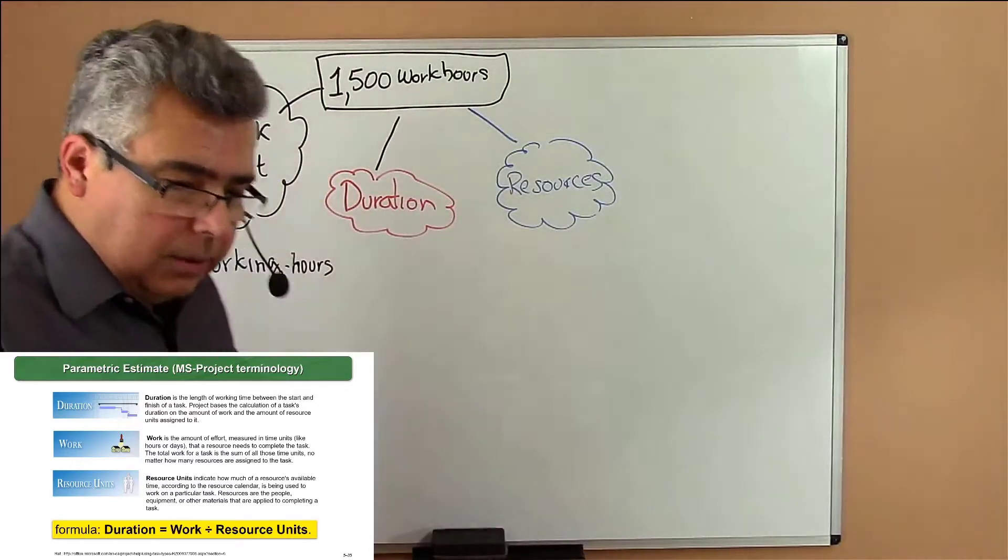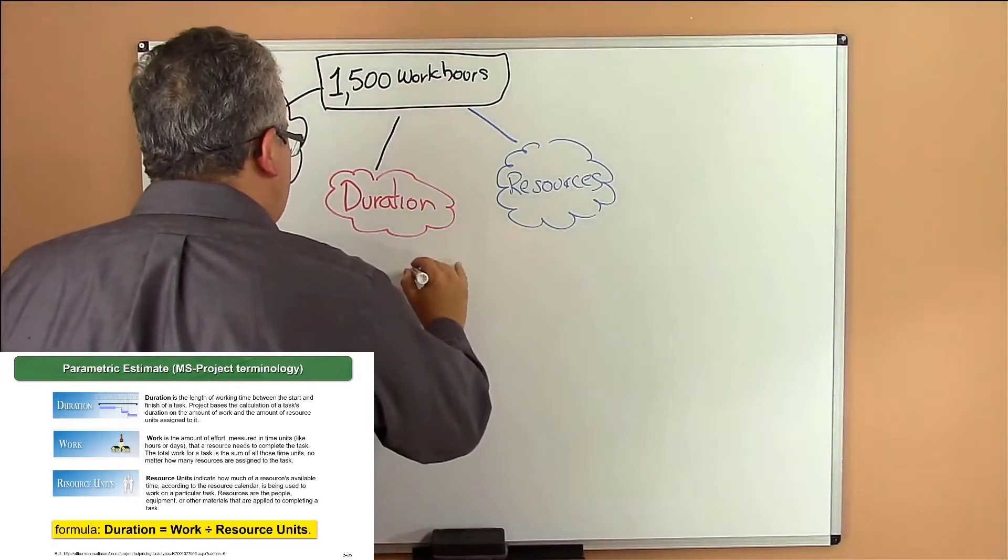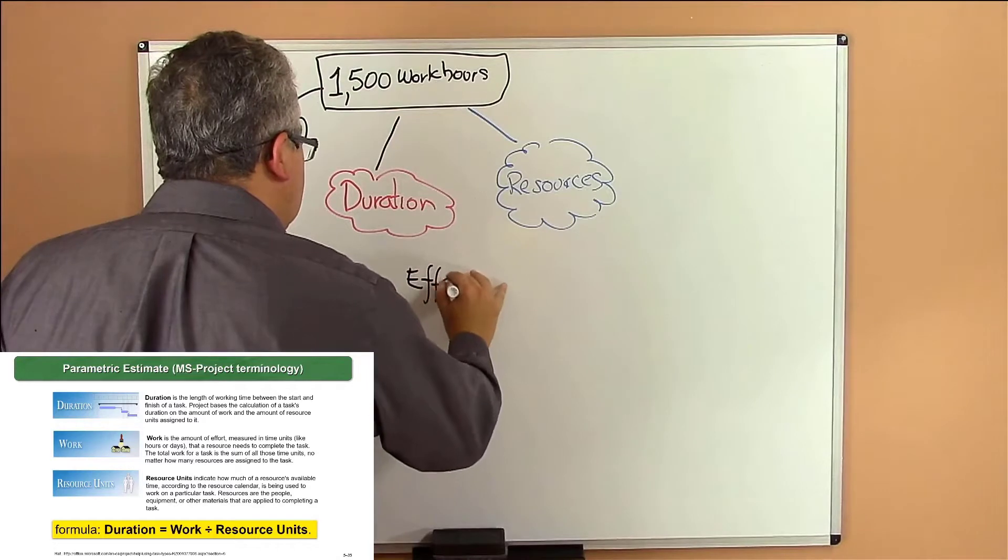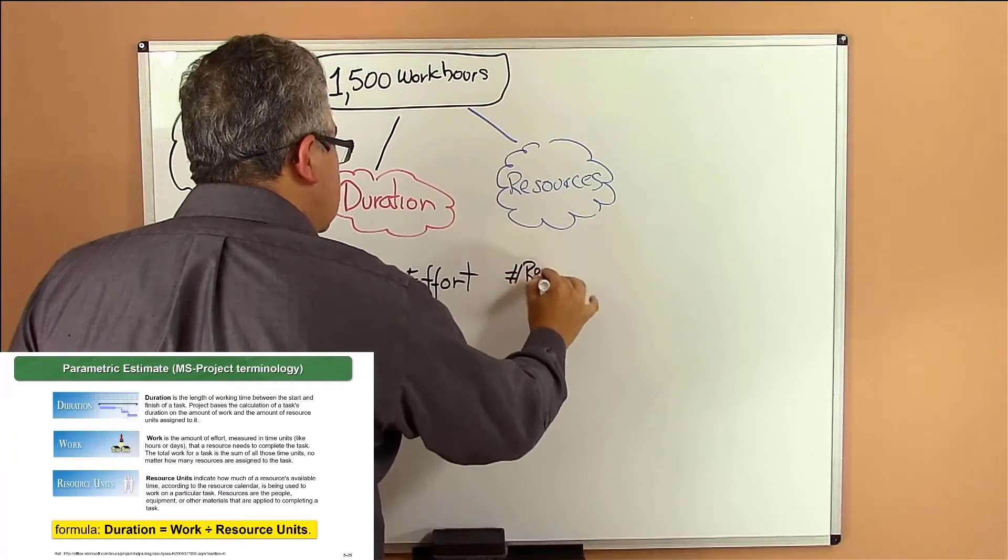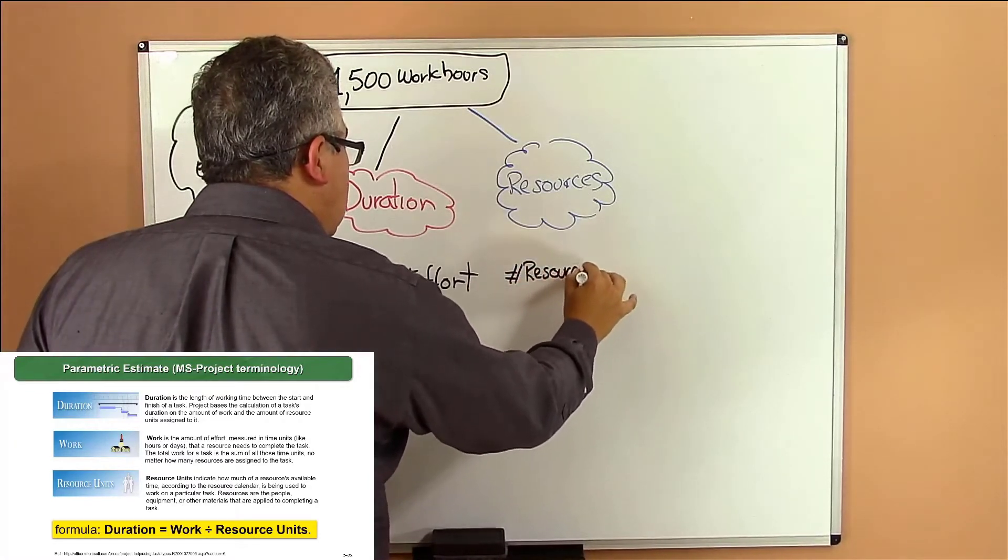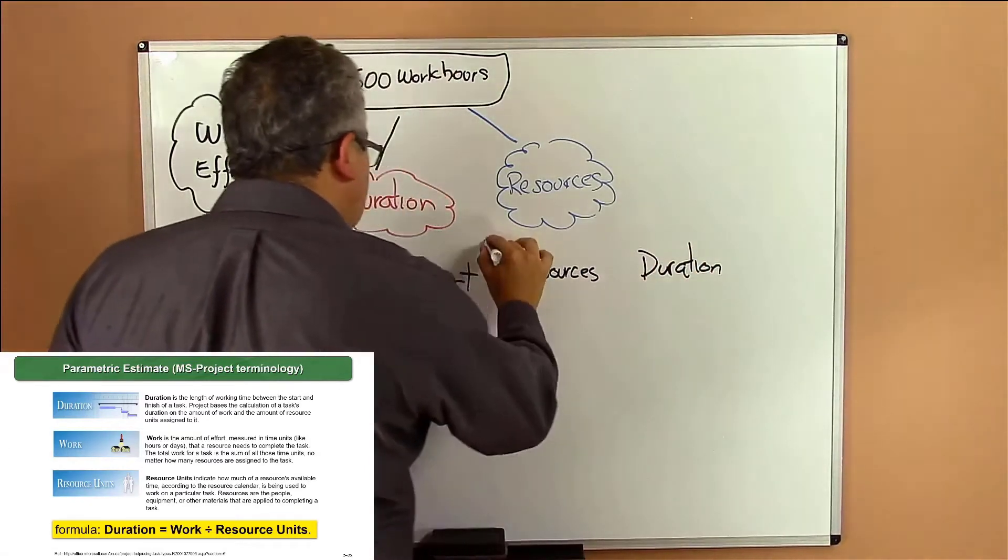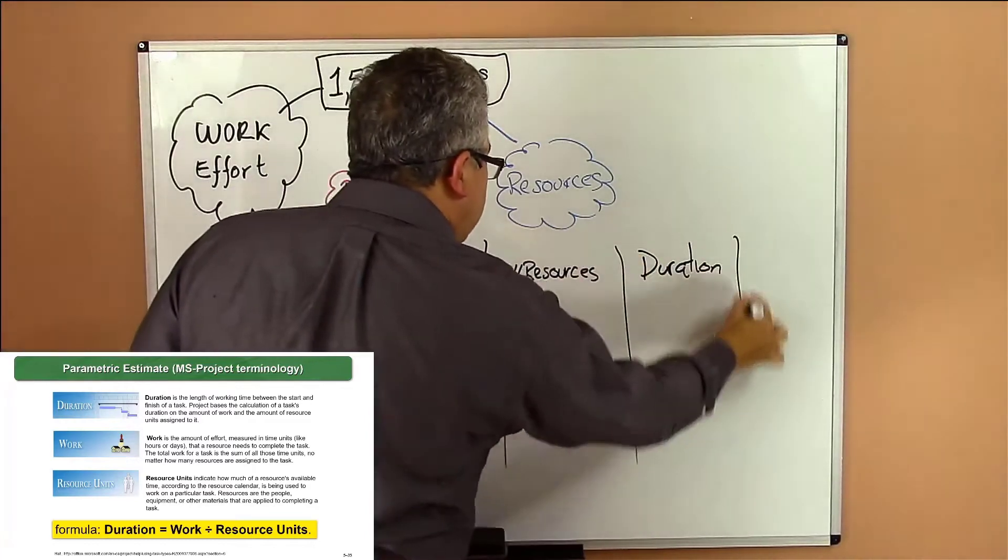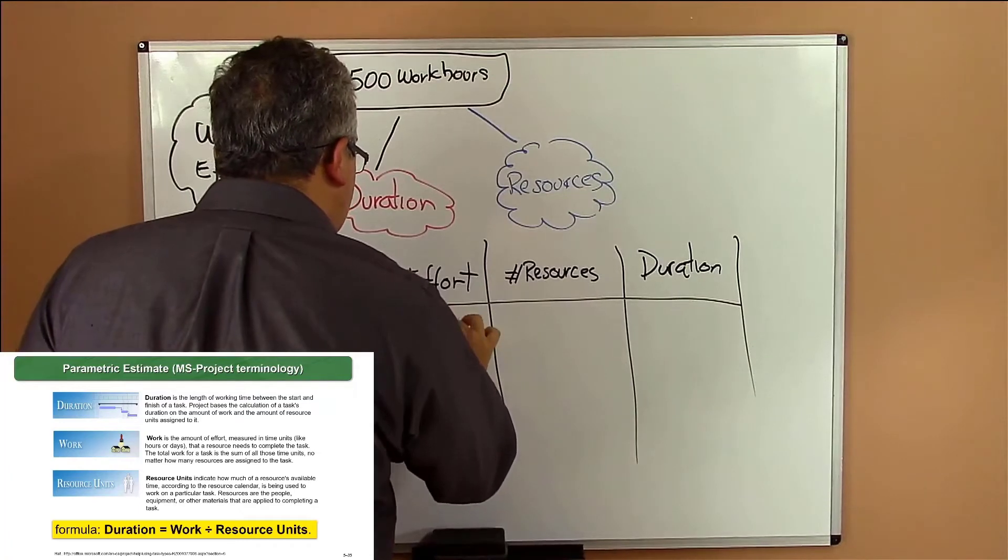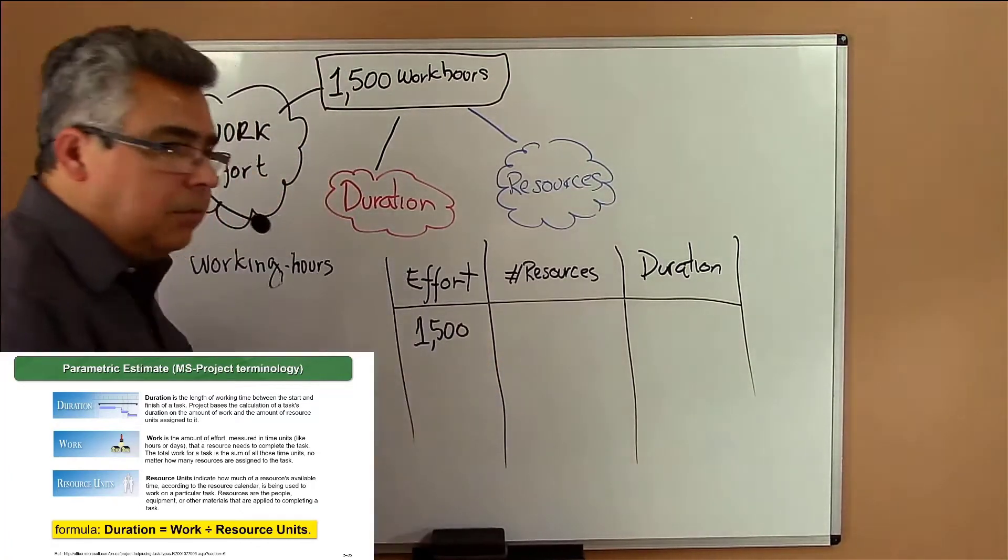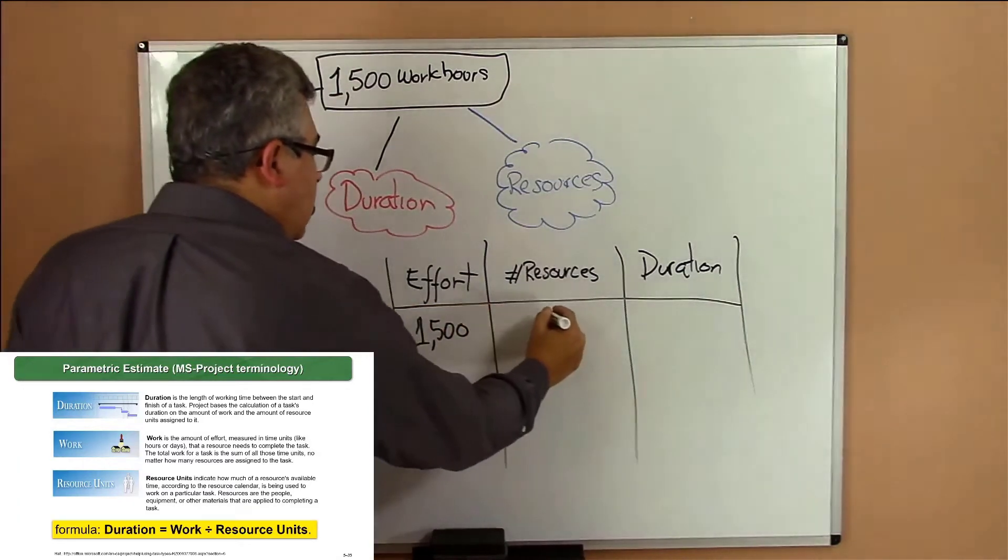Let's put a small table. Let's put here the effort. Let's put here the quantity of resources or people and duration. So we can have, let's suppose that the effort is the same, 1500. Let's say that I have one painter.